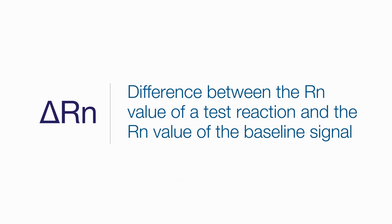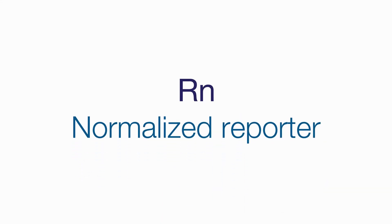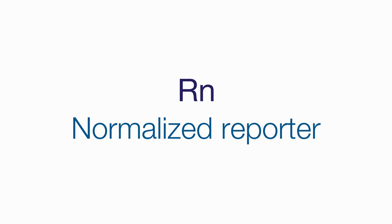Similarly, delta Rn is the Rn value of an experimental reaction minus the Rn value of the baseline signal. Rn stands for normalized reporter — it is the fluorescent signal from the reporter dye normalized to, or divided by, the signal from a passive reference dye.